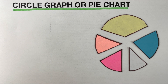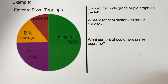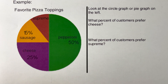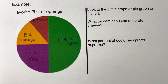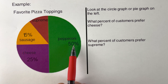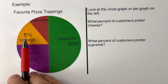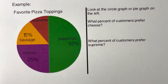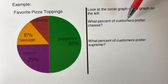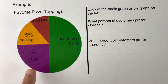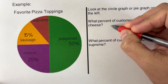To better understand the idea of a circle graph or pie chart, let's look at this example. This chart represents favorite pizza toppings. There are four toppings: pepperoni at 50%, cheese at 25%, sausage at 15%, and supreme is missing. The first question asks what percent of customers prefer cheese — looking at the pie chart, the answer is 25%.